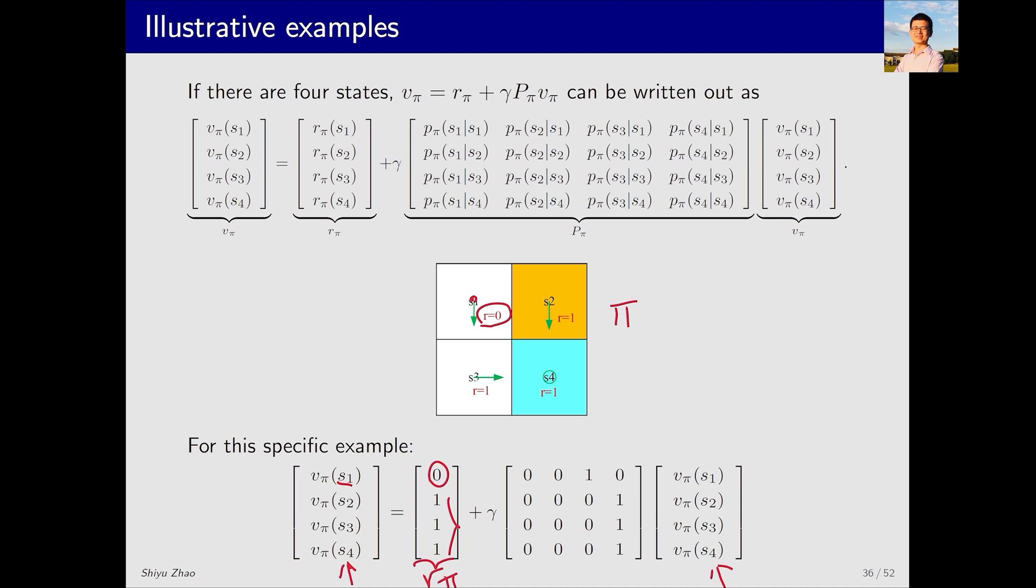Now, let's look at P_π, and this is P_π. For example, consider the first row. The first element represents the probability of transitioning from s1 to s1, which is 0. The second element represents the probability of transitioning from s1 to s2, also 0. The third is the probability of transitioning from s1 to s3, which is 1. The fourth is the probability of transitioning from s1 to s4, which is 0. The other rows can be written out similarly.